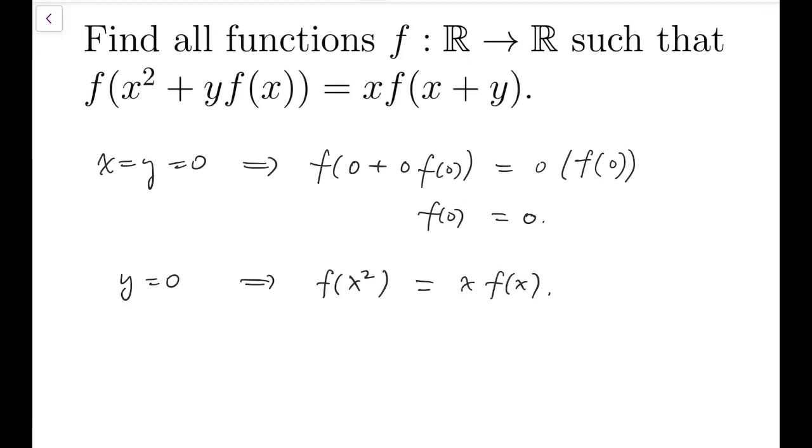Now this is very important because left hand side is kind of an even function. The right hand side is not. So I will replace x by minus x. And then we'll have f of x squared equals minus x f of minus x. So therefore f of minus x equals minus f of x, which means f is odd.